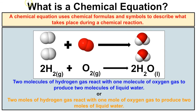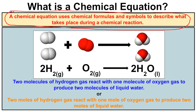Before we do so, we should probably talk about what a chemical equation is. A chemical equation uses chemical formulas and symbols to describe what takes place in a chemical reaction.